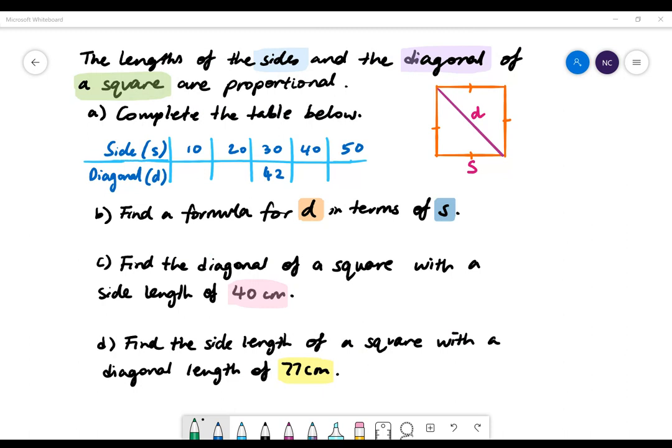Here is our last example. The length of the sides and the diagonal of a square are proportional. Complete the table below. The side length 30 and diagonal length 42 are given to us already. From this, we can find our multiplier. We'll do 42 divided by 30, which gives us 1.4.